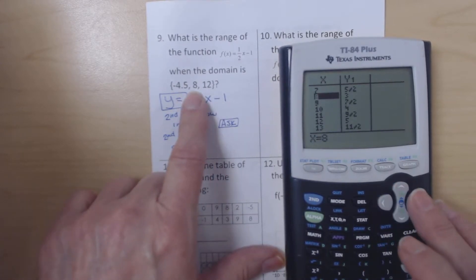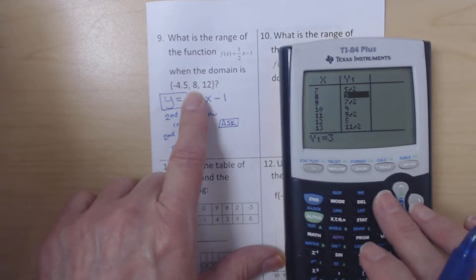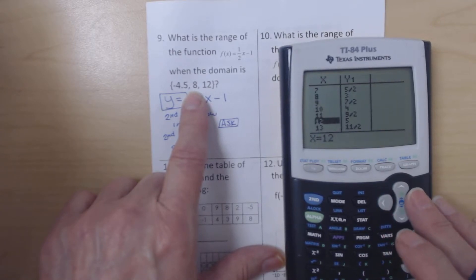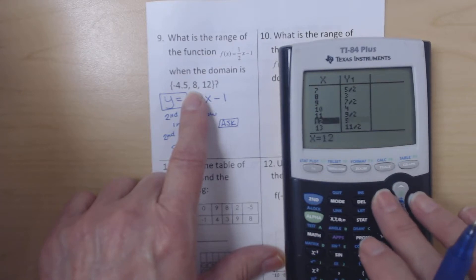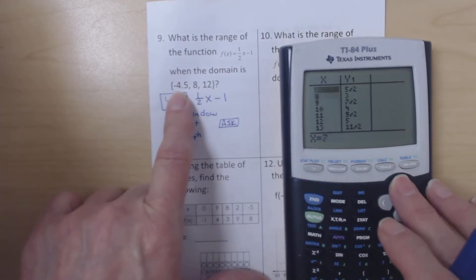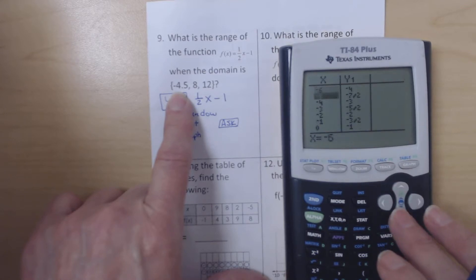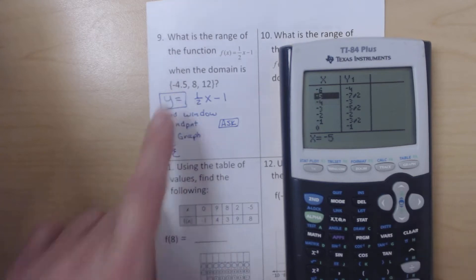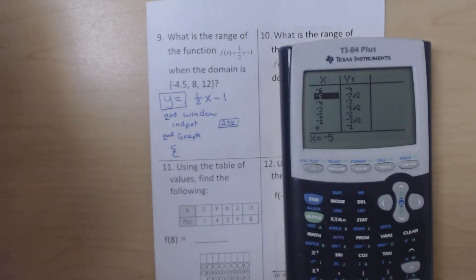When the x value is 8, my y value or function value is 3. When x is 12, my function value is 5. However, I need -4.5. So come up here to the negatives and it goes from -4 to -5. I don't have a -4.5. So I need to change a few things about the calculator to let me find that out.